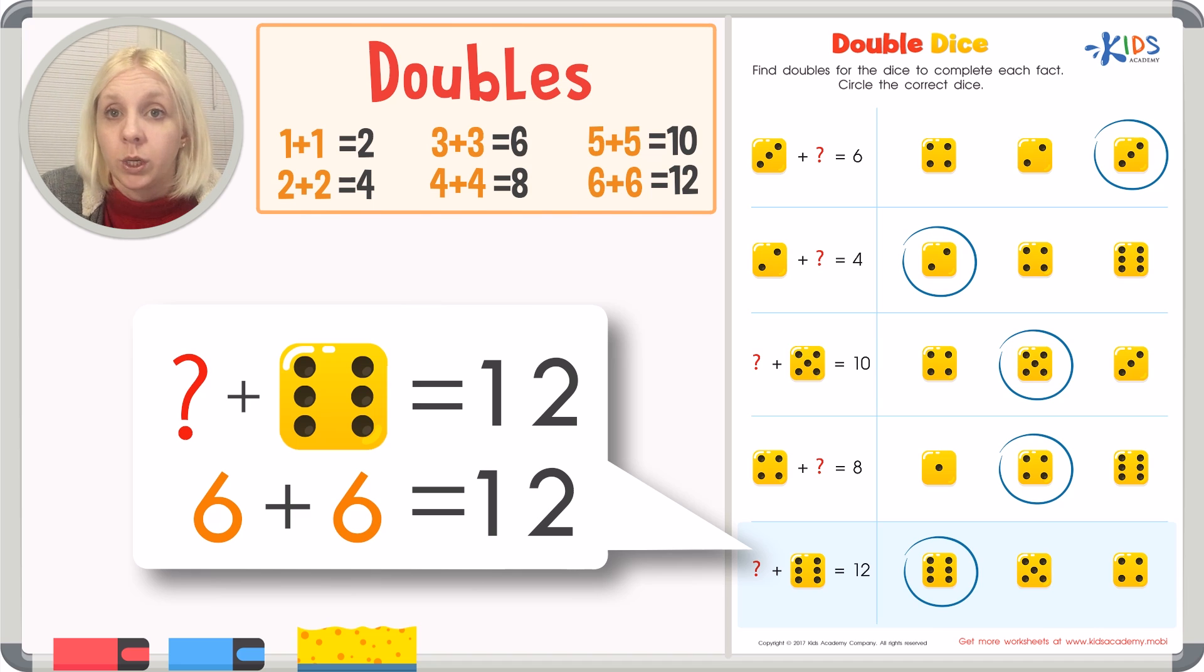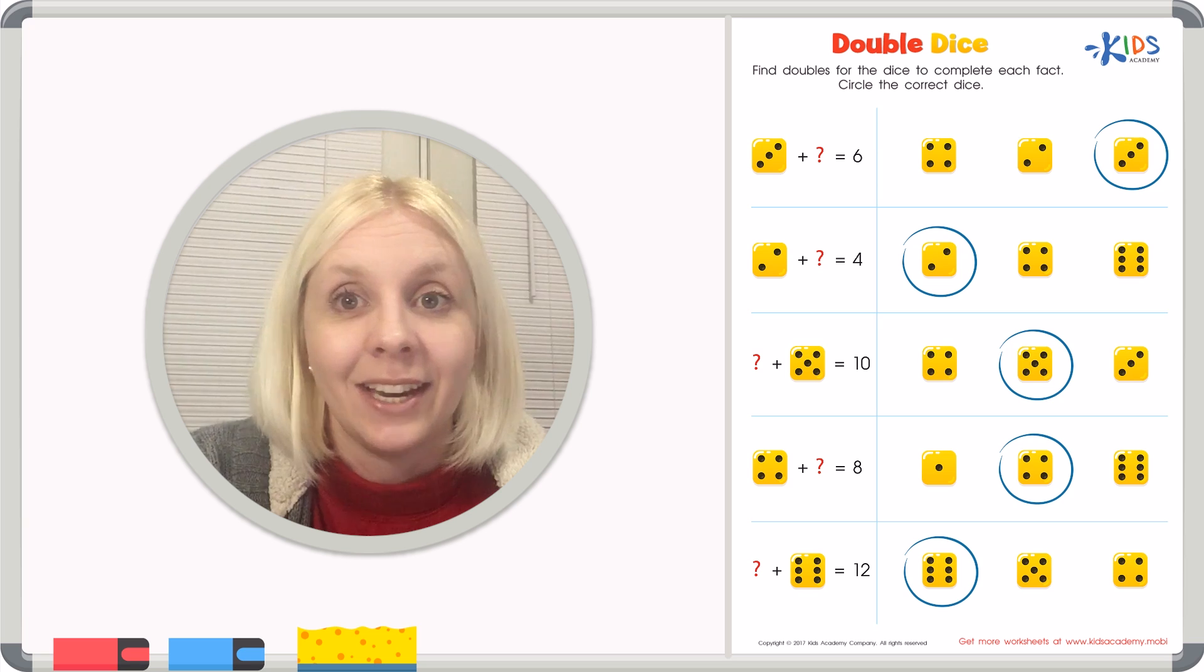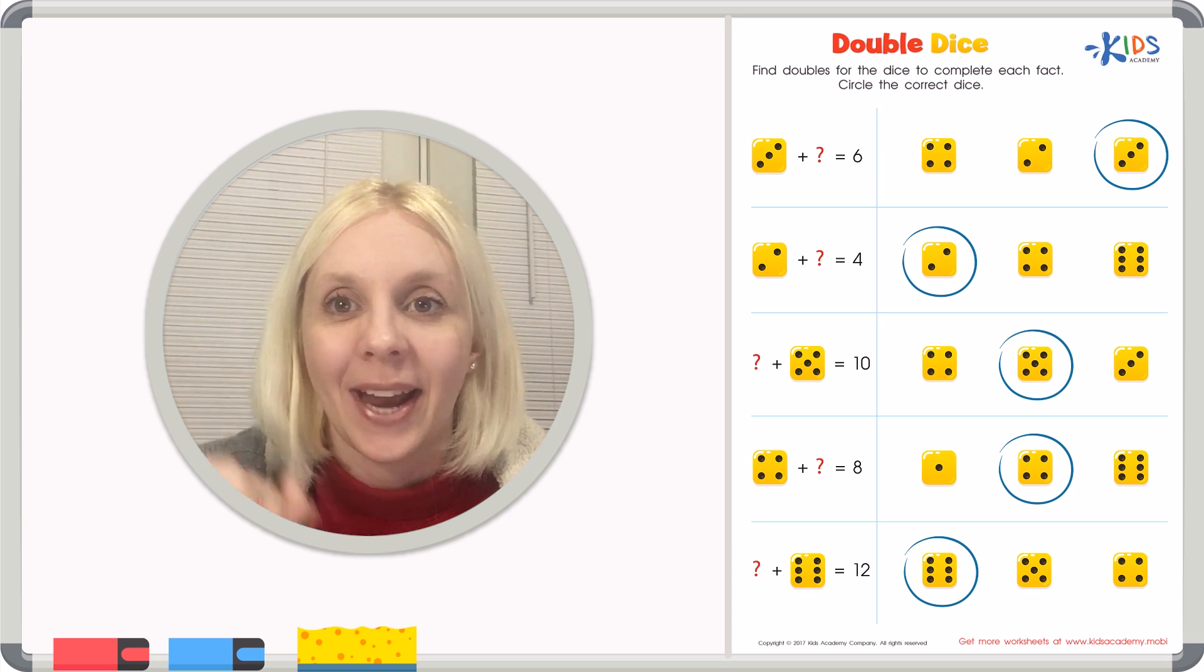It's really important that you memorize your doubles because it's going to make addition so much easier. Even when you're a grownup and you see doubles, like one plus one equals two, six plus six equals twelve, you're going to know it right away because you memorized it. So great job today on finding your double dice. I'll see you again next time. Bye-bye.